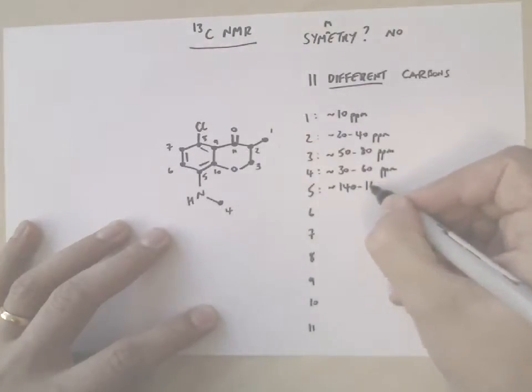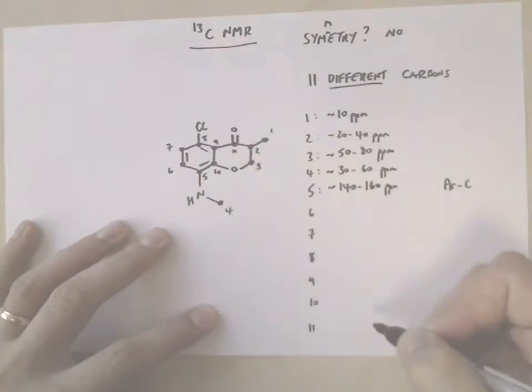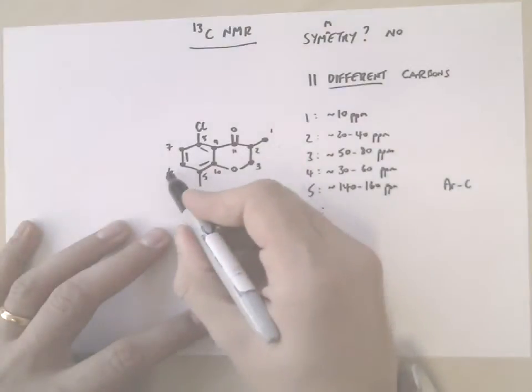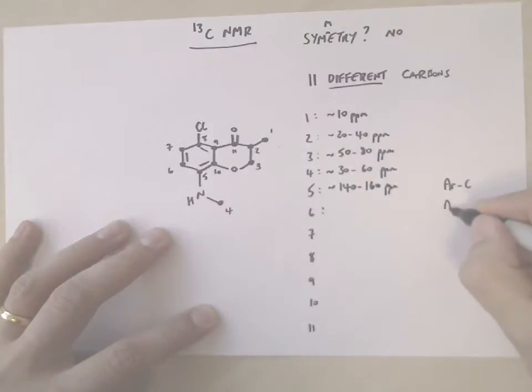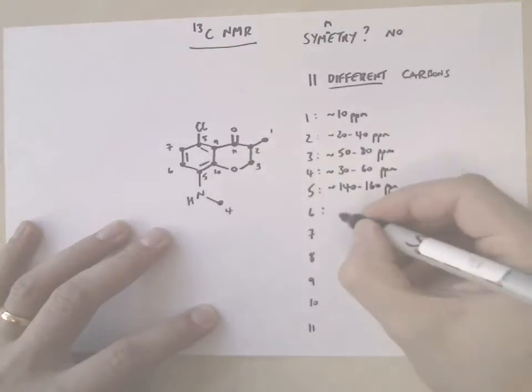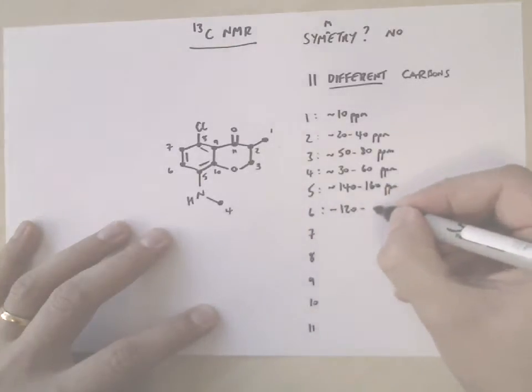Whereas carbon 6 has a hydrogen on, remember, and aromatic CHs, again looking at your charts, they come around 120 to 140 ppm.